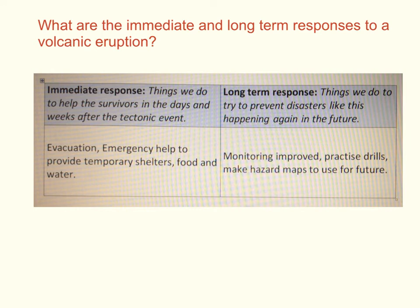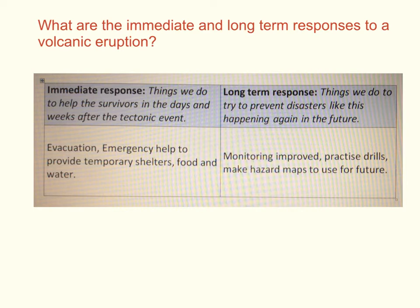We need to consider how we categorise the responses to a volcanic eruption. We do this by referring to immediate responses and long-term responses. Immediate responses are things done to help survivors in the days and weeks after the event, including evacuating people and providing temporary shelters, food and water. Longer term responses are things done to prevent disasters happening again, such as improving monitoring, conducting practice drills, and making hazard maps to identify areas of potential risk.